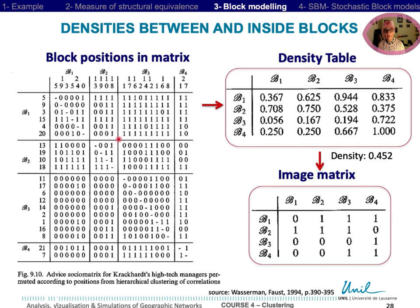Density tables between and inside block measure the density of blocks of cells. The values in the table are the ratio of ties to the total possible ties excepting cells' ties in the diagonal.